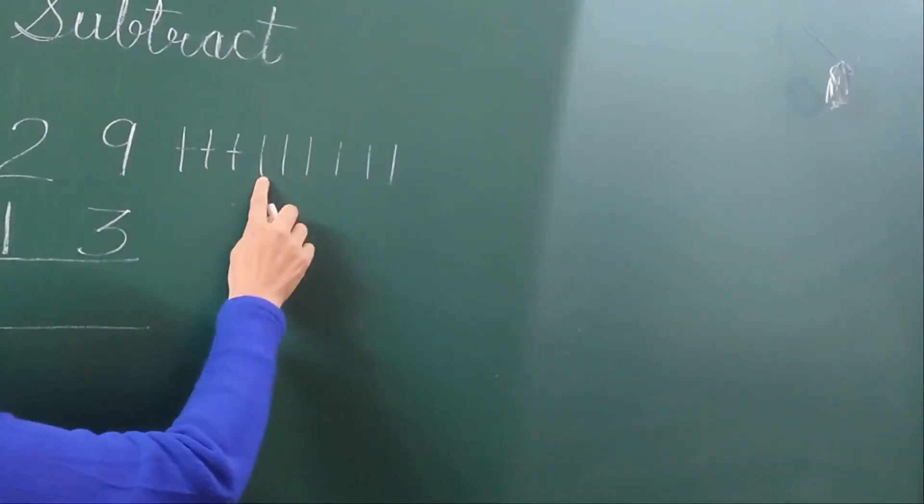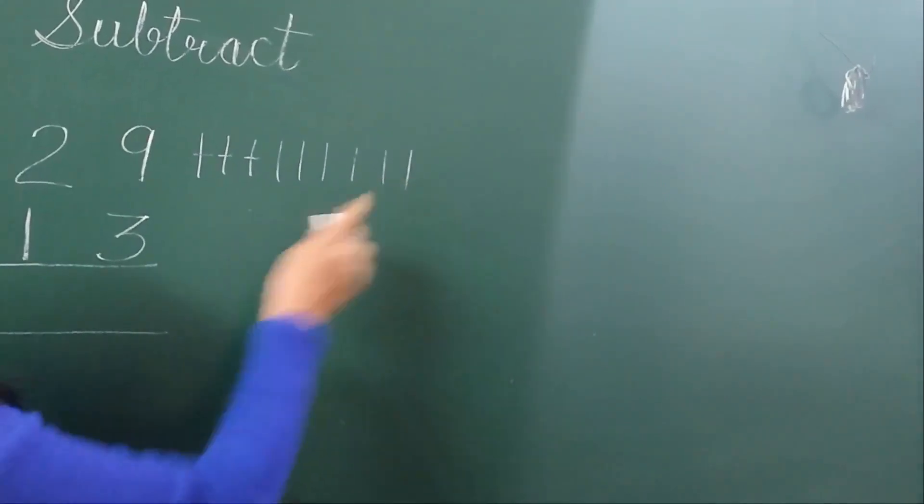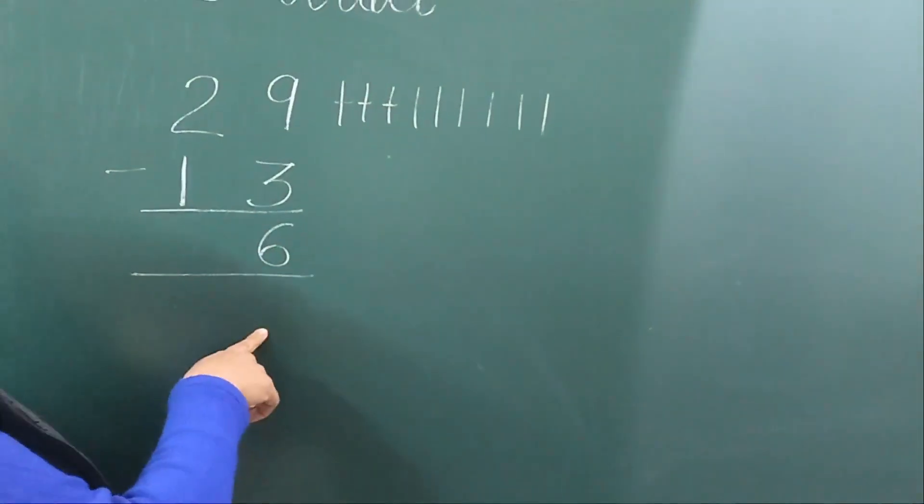How many lines are left? 1, 2, 3, 4, 5, 6. So 9 minus 3 equals 6.